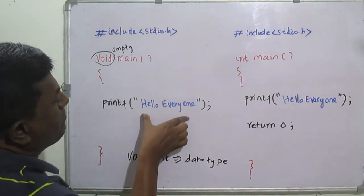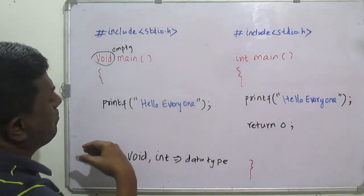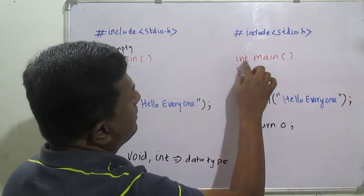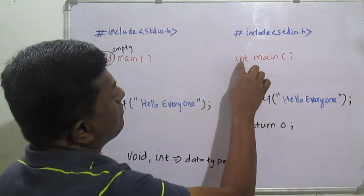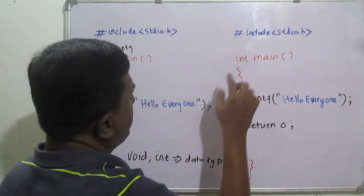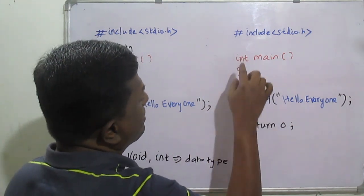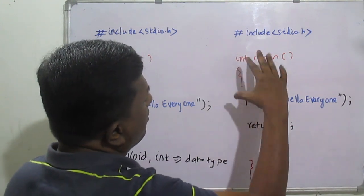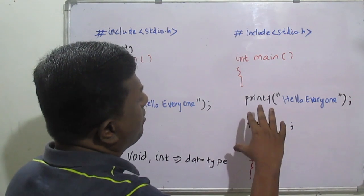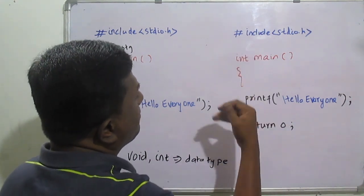'Hello Everyone' will appear on the screen and then the program will be terminated. Whereas with int main, the return type is integer — that is what we have to understand. int is nothing but a data type, so the return data type is integer. When the program is executed and successfully completed by the operating system, the return type is integer.